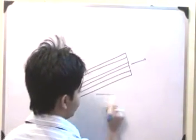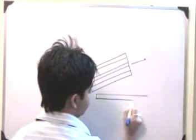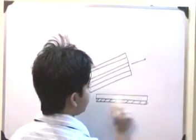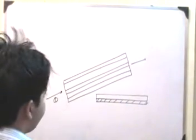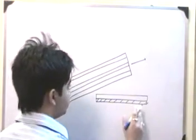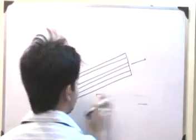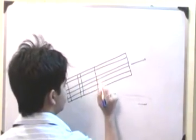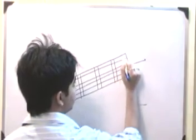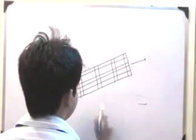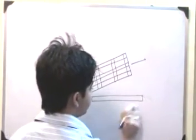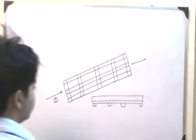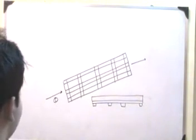In a front view, it will look like this: the deck is here and the stringer members are below it. This is my stringer member, this is my deck — and this is the top view. The loads have to be passed from the stringer to a floor beam. A floor beam is something perpendicular to the stringer. So loads are passed from the stringer to the floor beam, and in the front view we can see the deck, the stringer, and the floor beams.